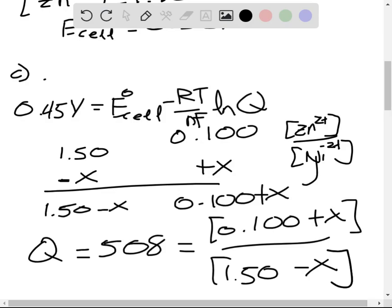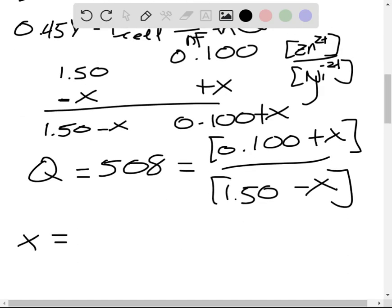So this would be one side, it would be 509 X. And the other side would be equivalent to just about 762. So now we can divide. So divide by 509. And we can see that X is equivalent to about 1.497 molars.